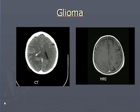Glioma. Again, one patient — CT on the left and MR on the right. In the CT you hardly see anything, even though contrast has been given. While on the right of the screen, you can see a small area of abnormal signal in the right occipital region. So this is the case of glioma.